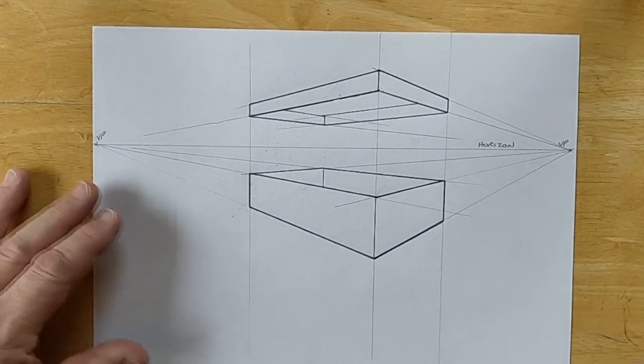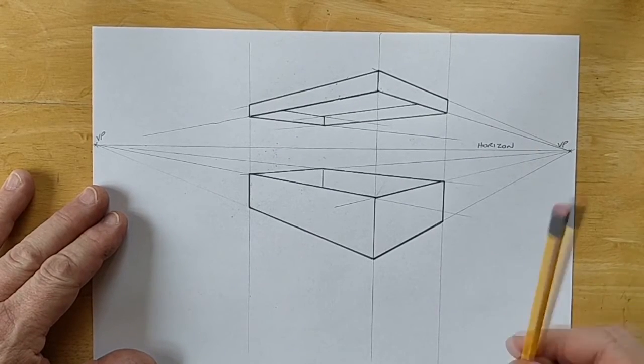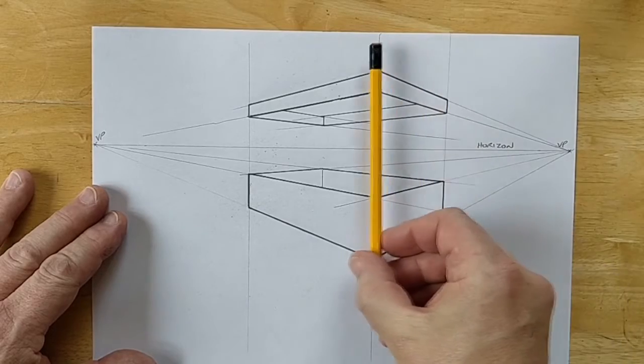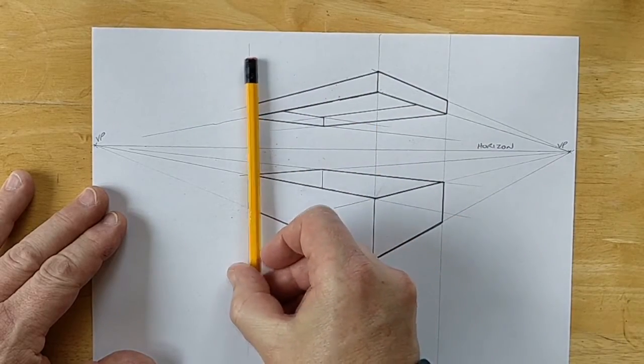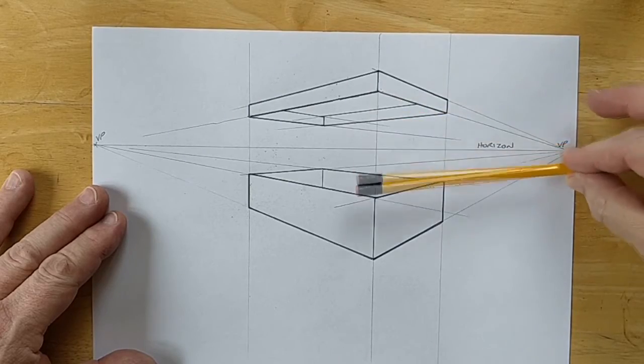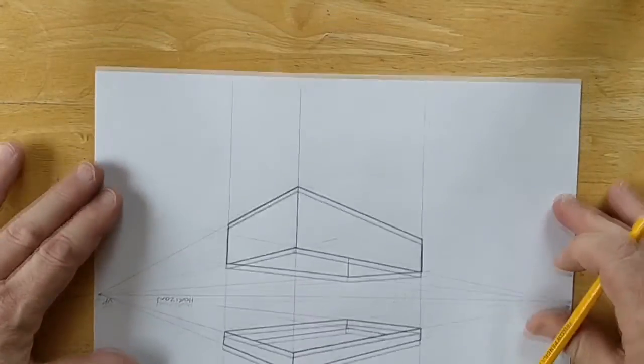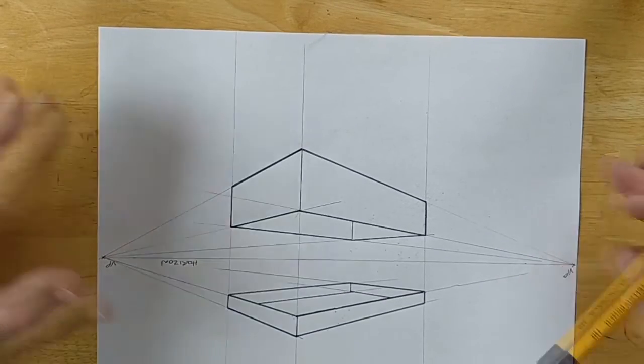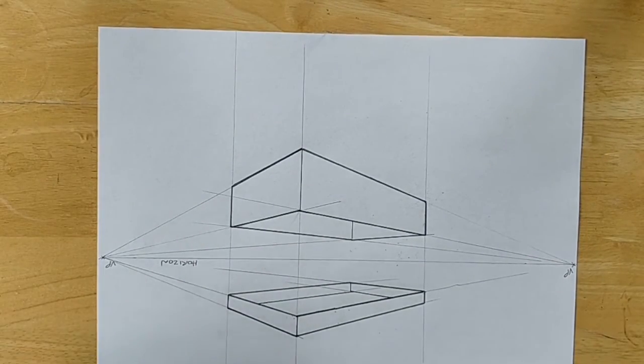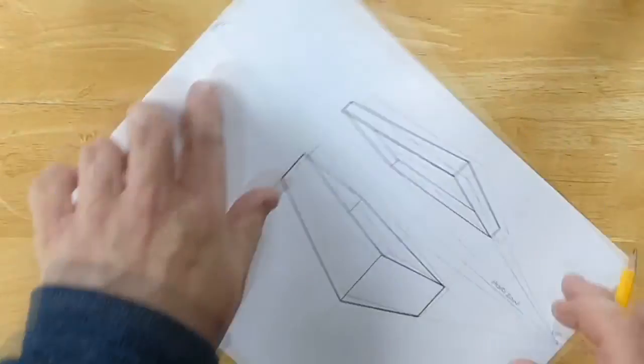One final check then. Are all our lines going the right way? Well it looks right to me. We've got our verticals are all vertical. And the other lines, because it's a box, they're all going to one of the vanishing points. We can flip that over just to have a check. Because if there's something wrong with your drawing then flipping it upside down can really highlight it. But that looks fine this way up as well. So I think we're fine on that.